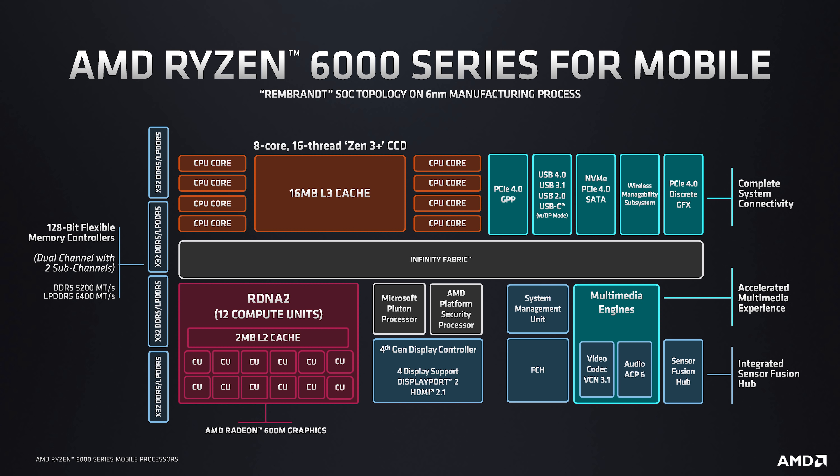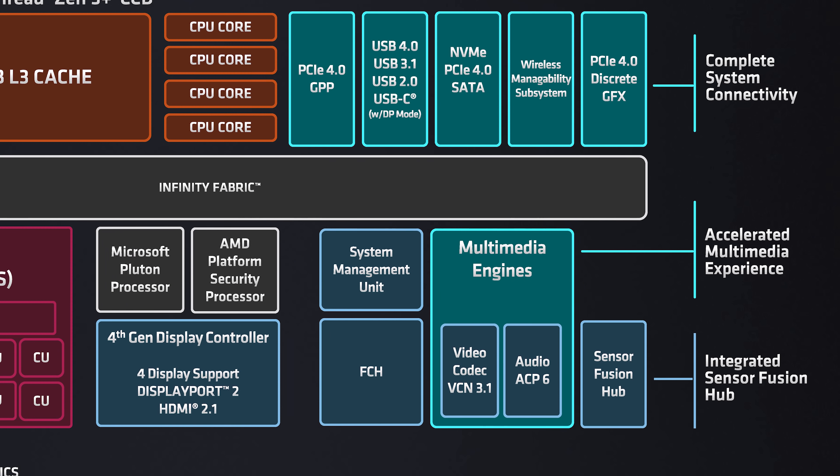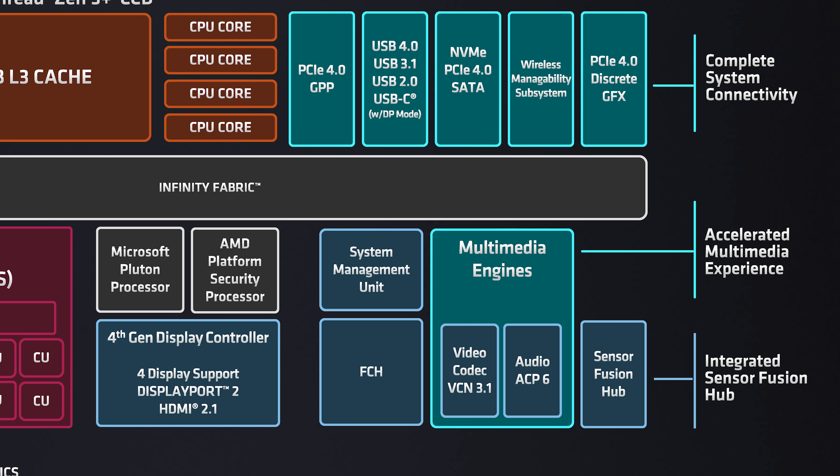The media engine has been upgraded to support AV1 decoding with VCN 3.1, which is actually a step newer than VCN 3.0 that we get with Navi 2 GPUs based on RDNA 2. This is a massive improvement over prior APUs which only used VCN 2.x and didn't support emerging tech like AV1. Combined with the much faster iGPU, this should lead to large gains in hardware-accelerated apps like Adobe Premiere.